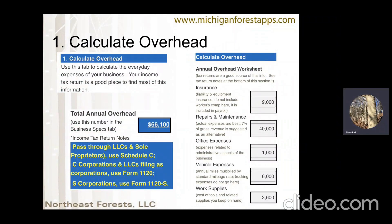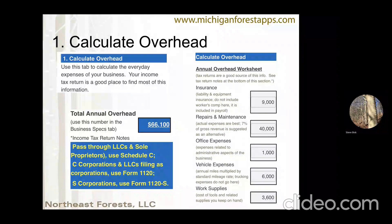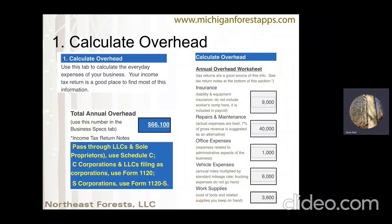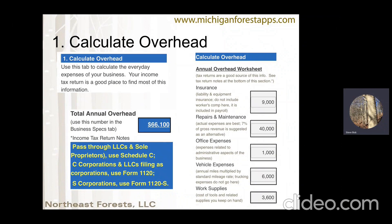When calculating overhead, you can get this information typically from your income tax return. People generally do not under-report their expenses, and that's a good thing. If you're an LLC or sole proprietor, you're probably going to use Schedule C. C Corps and LLCs filing as corporations use Form 1120, and S Corps use Form 1120S. These categories mostly follow right along here — you'll enter insurance, repairs and maintenance, office expenses, and a few other categories. That'll give your annual overhead.